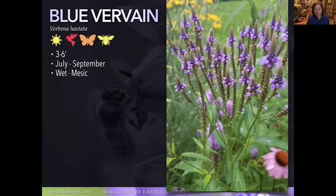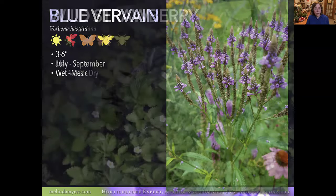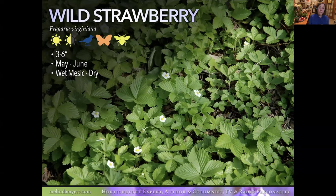Blue Vervain likes it moist and is another one you can grow in small spaces — a nice vertical accent, and not aggressive at all. You can see it here with Purple Coneflower, which also likes moist to well-drained soils. It's a great pollinator and hummingbird plant. This one is taller than Hoary Vervain, which prefers dry conditions.